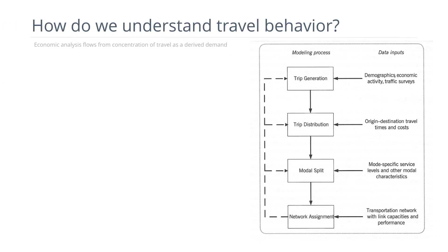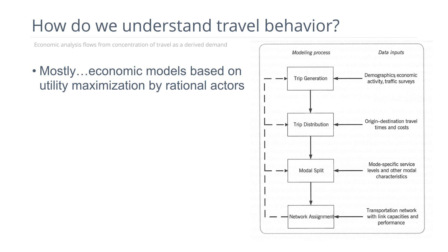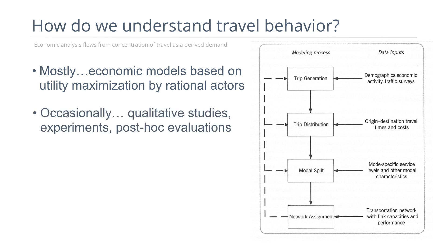Often we use an economic approach to understanding the basis for travel. These are models that assume economic rationality — that the traveler is a utility maximizer who will choose travel modes, travel distances, and so on that best suit their needs. Occasionally, qualitative approaches, experimental approaches, and post-hoc evaluations are done to provide more richness of insight.